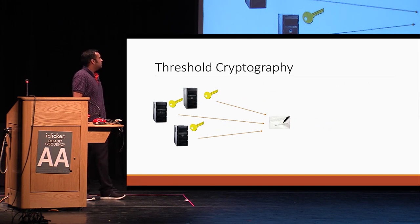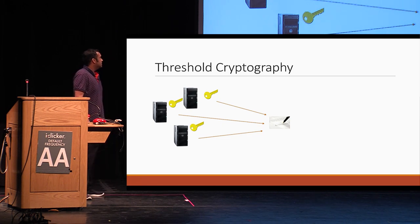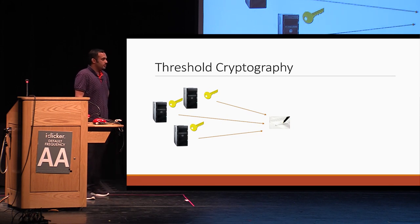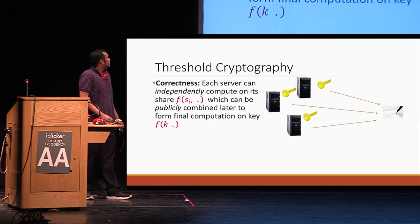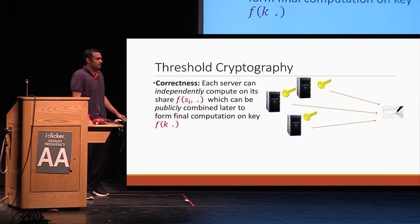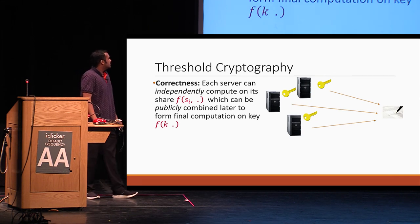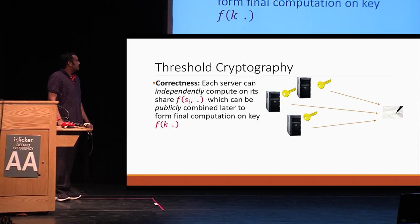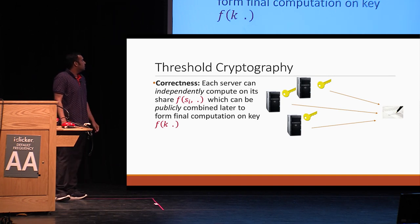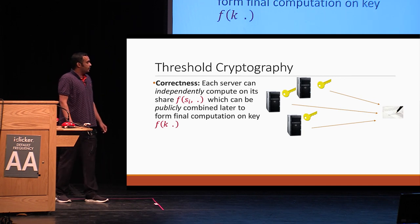As an example, what Tony would like is that if he wants to generate a signature, he would like to share these partial signing keys on the servers, and then the servers should be able to issue some sort of partial signatures which Tony should be able to combine to get a signature. More formally, we require the notion of correctness where we want that each server can independently compute on the share to generate F of S_i, and these evaluation shares should be combinable publicly to recover the final computation F of K.